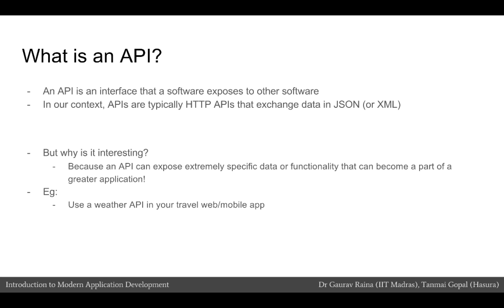Why is an API such an interesting thing that's become such a buzzword over the last four or five years? This is because an API can expose extremely specific data or functionality in a way that another machine or another software can understand it. This allows us to build applications that piece together various different APIs. A very simple example would be using a weather API if you're building a travel web or mobile app.